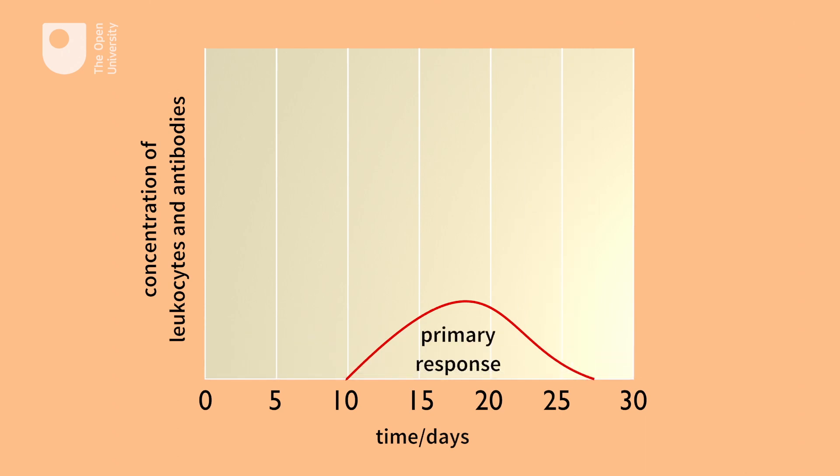Now, let's take a look at the secondary adaptive immune response by plotting this on the same chart. This occurs with a repeat infection by the same pathogen. In our example, this would be a repeat contraction of the chickenpox virus.